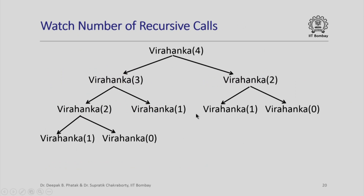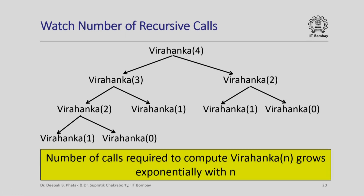While this is elegant, we should observe how many recursive calls are made when computing Virahanka(4). To compute Virahanka(4), we call Virahanka(3) and Virahanka(2); to compute Virahanka(3), we call Virahanka(2) and Virahanka(1); and to compute Virahanka(2), we call Virahanka(1) and Virahanka(0), which are the termination cases. Notice that Virahanka(2) is computed twice — once for Virahanka(4) and once for Virahanka(3) — so all that computation effort is replicated. It can be shown that the number of calls required to compute Virahanka(n) using this recursive function grows exponentially, which means we cannot compute Virahanka numbers for large values of n.